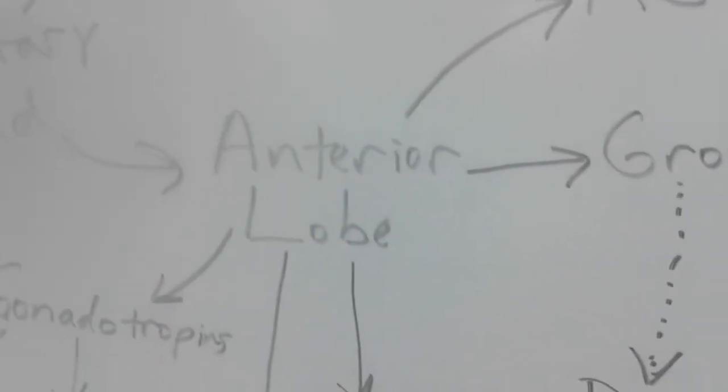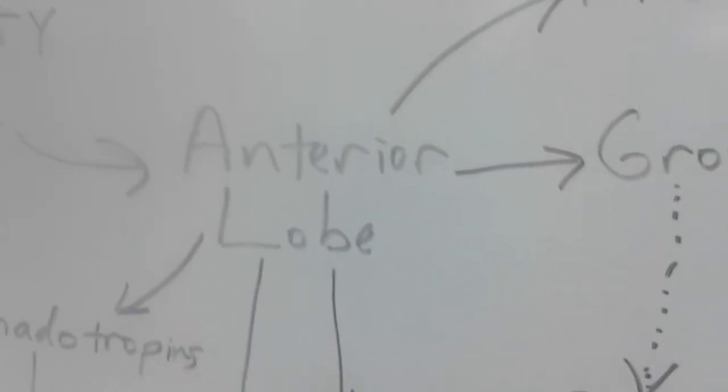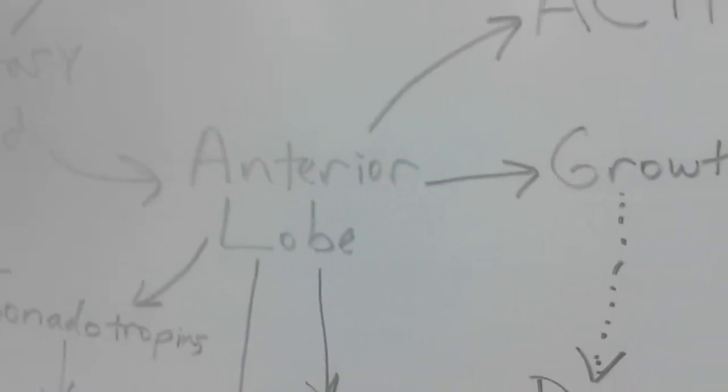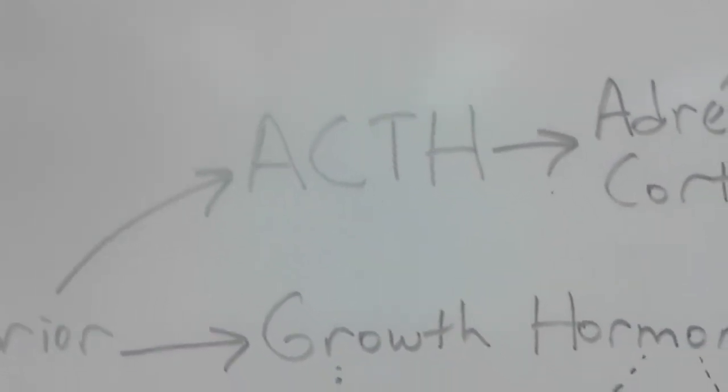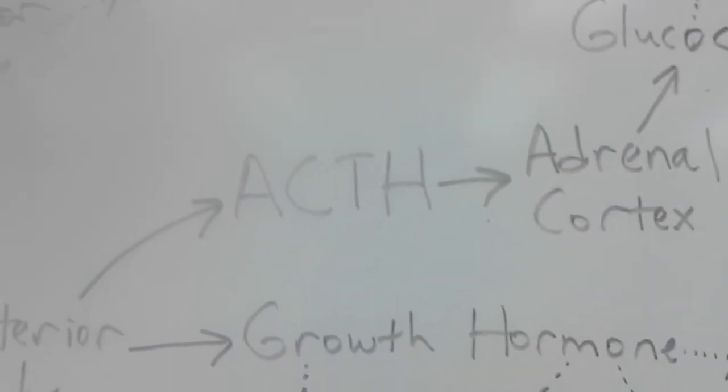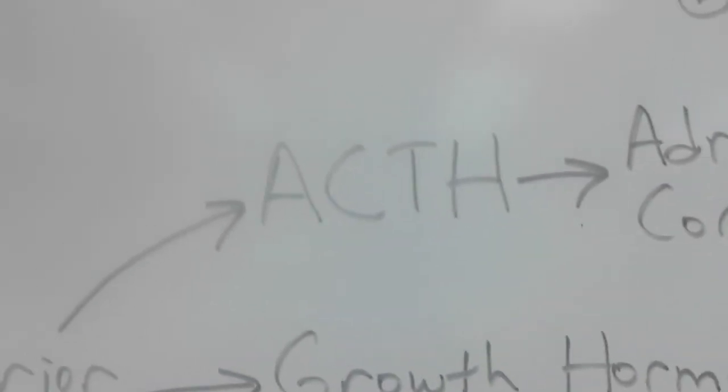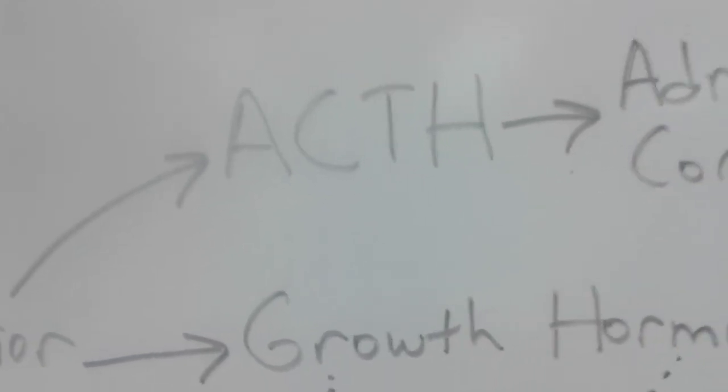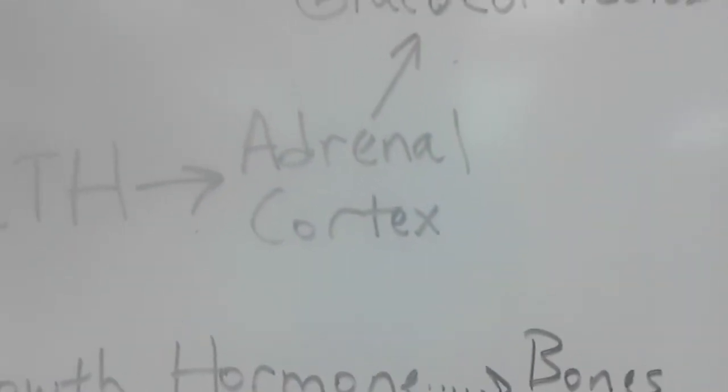The posterior lobe we just talked about it, it releases ADH and oxytocin. Whereas the anterior lobe is not getting its hormones from somewhere else, it's not having to store it from somebody else. The anterior lobe contains normal endocrine cells that produce several different hormones. One of which is ACTH which is adrenal corticotropic hormone. Anytime a name of a hormone has tropin in it I always say that that means that hormone has you tripping.